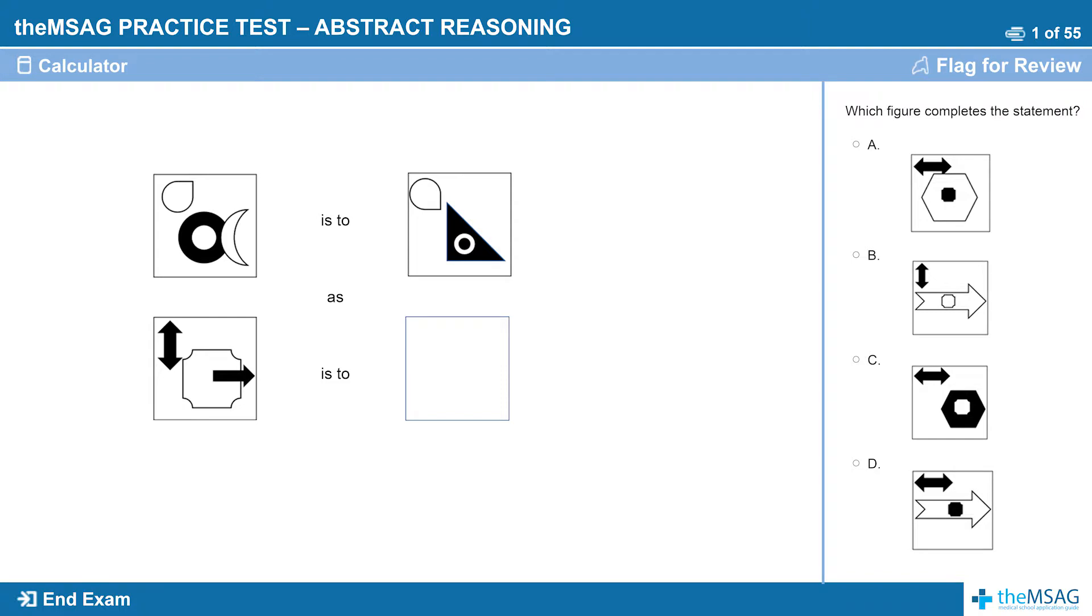Question one: which figure completes the statement? First, what is the question even asking? It's asking you to spot the changes that have occurred between the top two boxes, the ones with 'is to' in between.